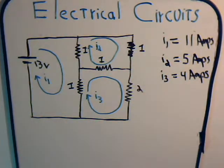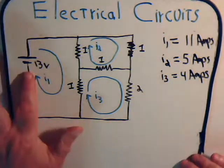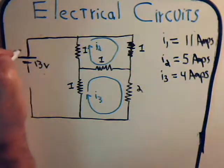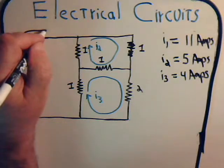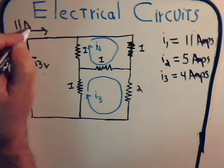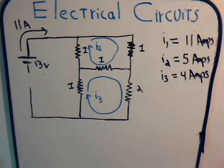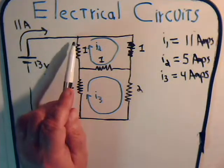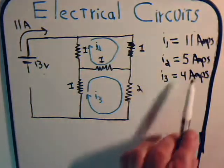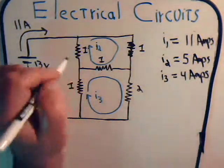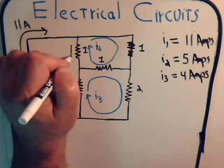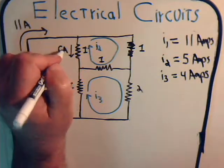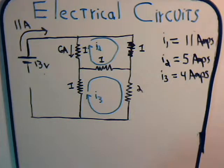So I1 is 11 amps, so here we have 11 amps coming into the circuit like this. Now, through here, through this resistor, we have 11 amps minus 5 amps, so we have 6 amps in that direction for that resistor.